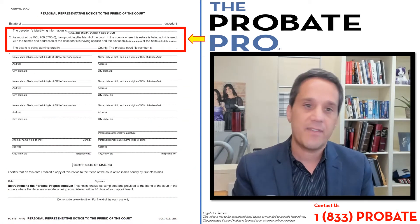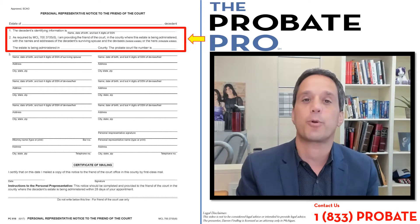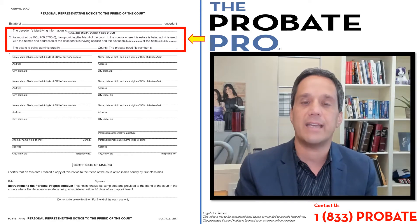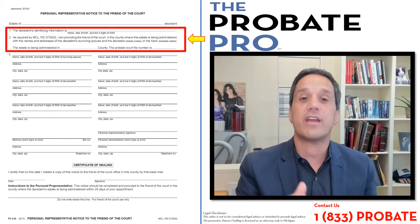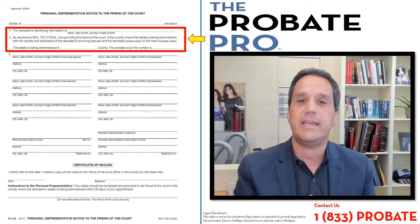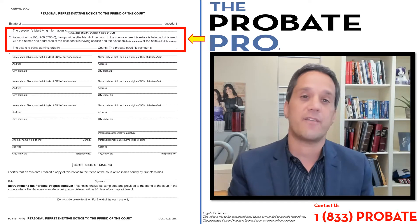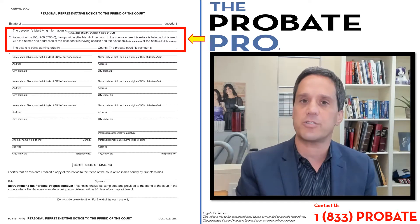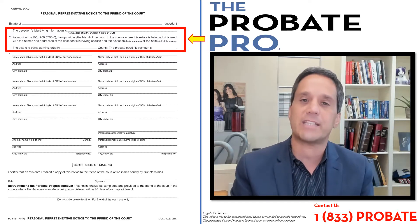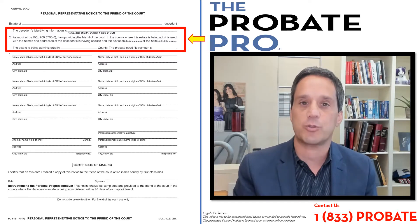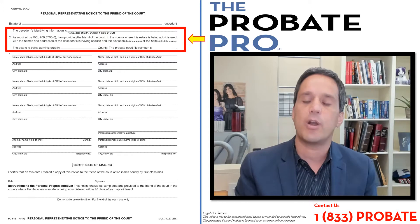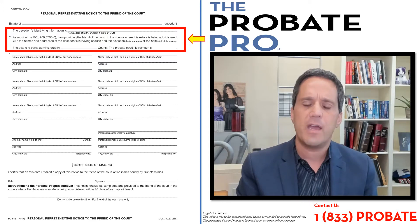Let's walk through this particular form. The top part identifies the name of the estate — that of course is the person that died. The area we're highlighting gives some additional identifying features including the last four digits of that person's social security number as well as the date of birth.